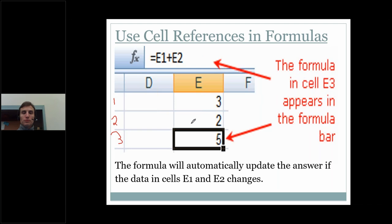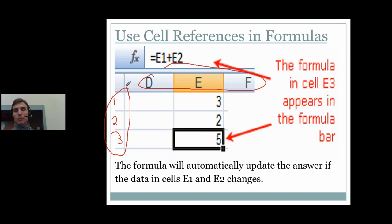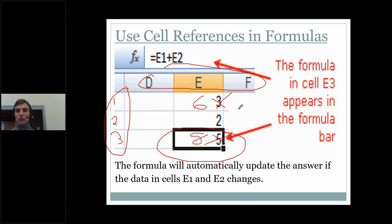Data often changes — we're often updating it. What does not change are the cell names. Your column letters and row numbers are constants; they cannot be changed. So whatever is in cell E1 and E2 will dictate the formula and its resulting answer. If I go to cell E1 and change this 3 to a 6, the answer shown in cell E3 is going to instantly and automatically update to an 8. I can update my data values as often as I need to, and those formulas and their answers will just update accordingly — automatically and instantaneously.